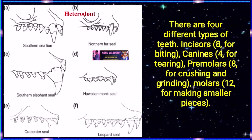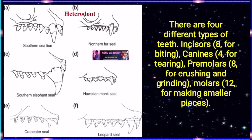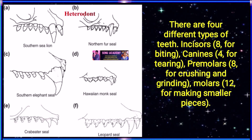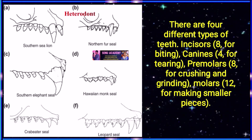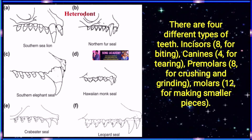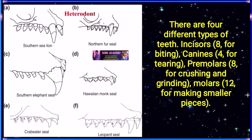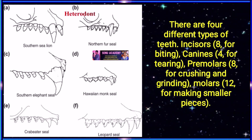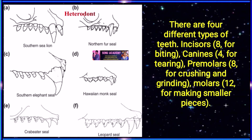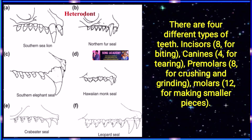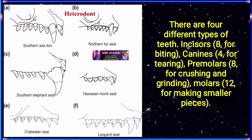Now let us see what heterodont teeth are. Heterodont teeth are of four types: incisors for biting, canines for tearing, premolars — 8 — for crushing and grinding, and molars — 12 — for making smaller pieces. Example: metatherian and eutherian animals have this type of teeth.